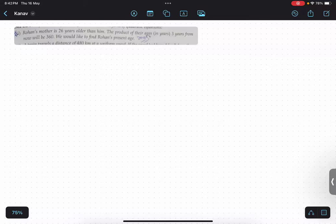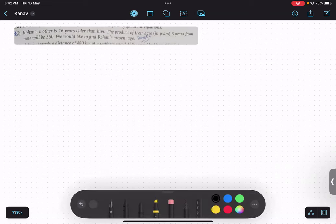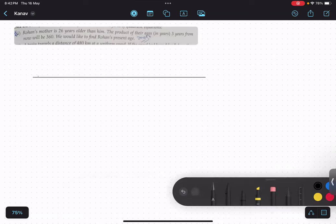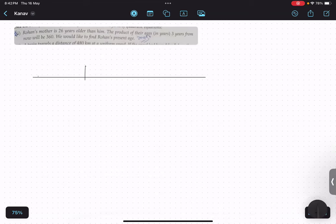Whenever we have an age-related question, do you remember what we used to do? We always used to make a table: past, present, and future. Is that something clear? Yes.